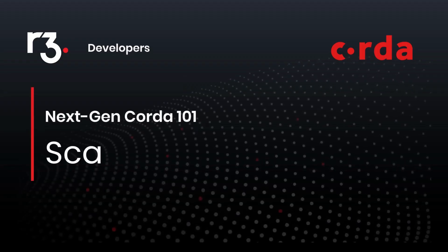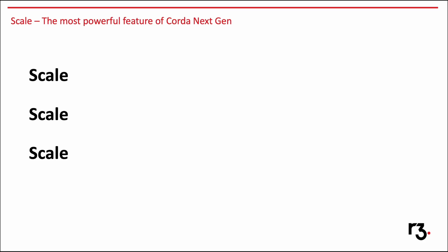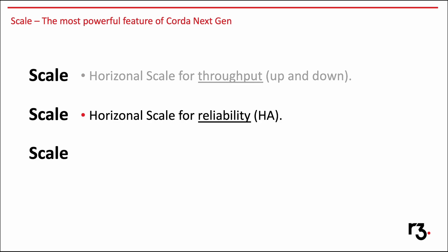One of the most powerful features of Next Gen Coda is scaling. How do we make sure that we will be able to easily scale up and down based on the current load? How do we make sure that we always run Coda in a highly reliable way? And how do we make sure that we can support multi-tenancy and easily scale the number of nodes?